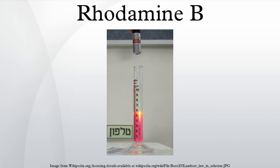The fluorescence yield is temperature-dependent. The solubility of Rhodamine B in water is 15 g per litre. However, the solubility in acetic acid solution is 400 g per litre. Chlorinated tap water decomposes Rhodamine B. Rhodamine B solutions are often absorbed in plastics; therefore, it should be kept in glass.